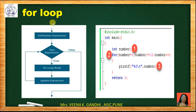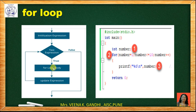You can see in the flowchart: first, initialization of the expression — initialize the control variable. Then test the expression. If the test expression is true, execute the loop body. Then update the expression, and then again test the condition. If it fails, the for loop will be terminated.